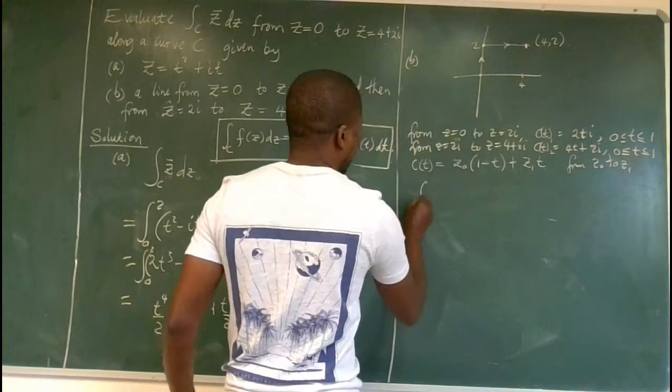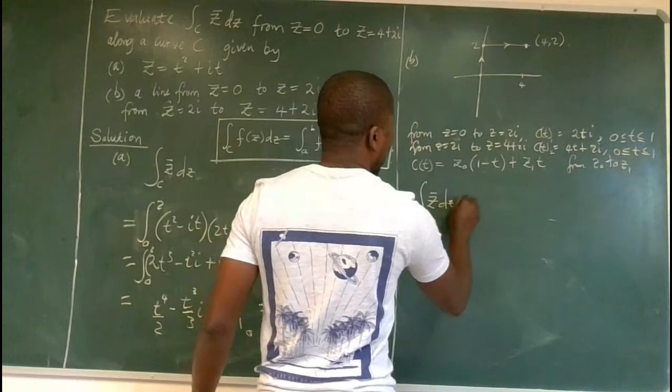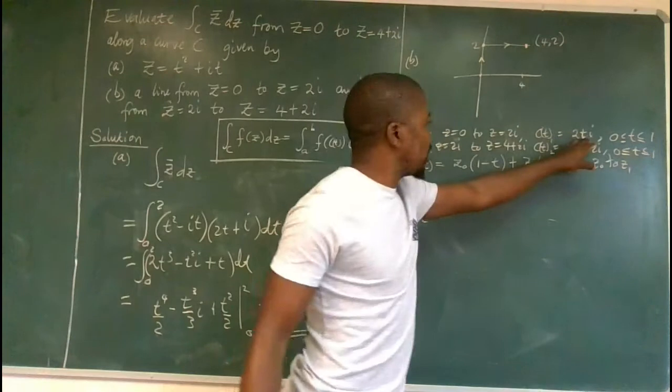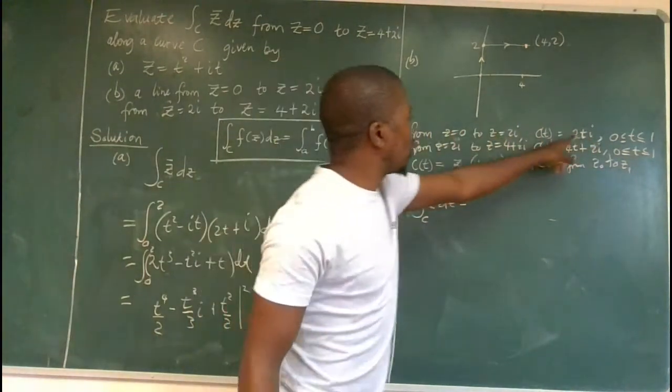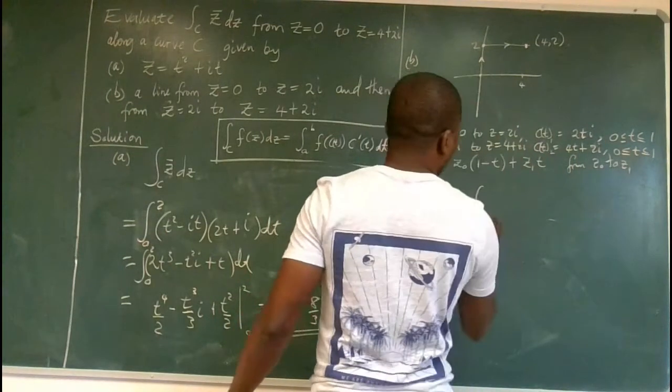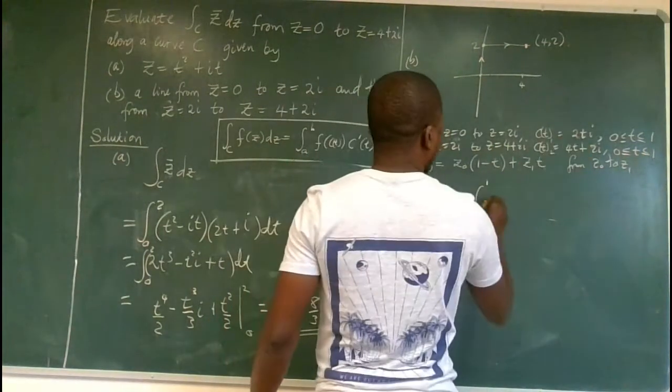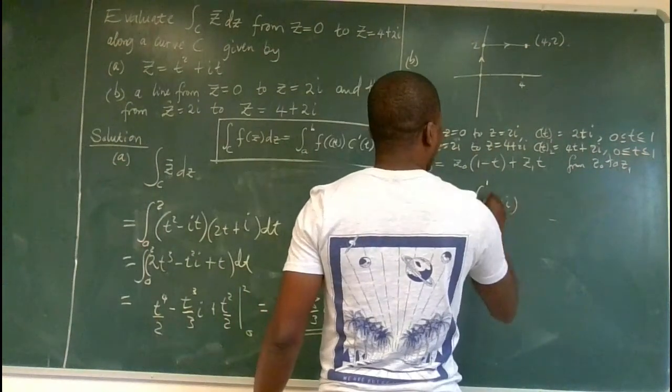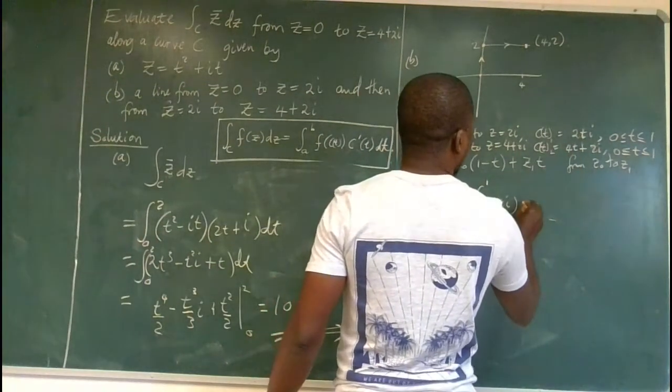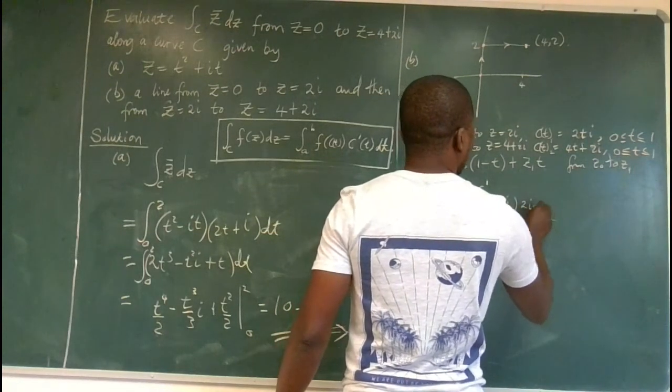So now that we have everything, we say the integral of z bar dz now is equal to, remember, the formula requires us to substitute, to take the function c(t), put it into z. So we need the conjugate of that, which is the integral, remember, in this first piece, we are doing t from 0 to 1. The conjugate of that is minus 2t i, and then the derivative of that is 2i. dt.